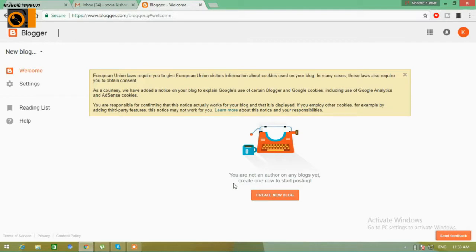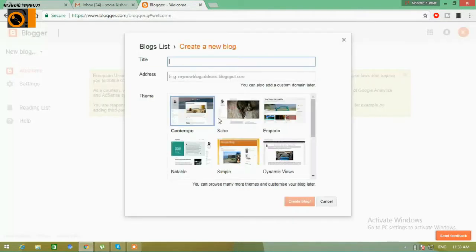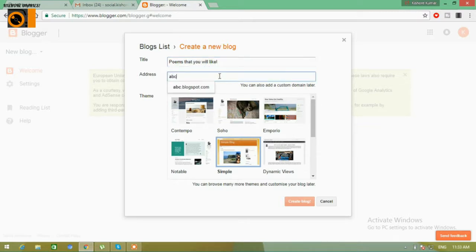Now we get display name. We have to type a display name here and continue to Blogger. Now we have to click 'Create Your Blog' and have to select a theme. Apart from that, we have to provide a title. Say it is a writer's blog, so the title can be 'Poems That You Will Like.'